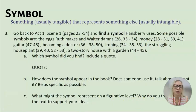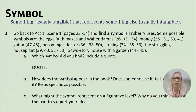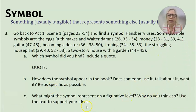So what we want you to do now is go back to Act 1, Scene 1 and find a symbol Hansberry uses. These are some possible symbols. Find a symbol and a quote, then explain how the symbol appears in the text. And finally, think about what the symbol might represent on a figurative level. Good luck as you work on this. This is what your mastery check will be about.